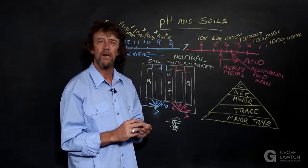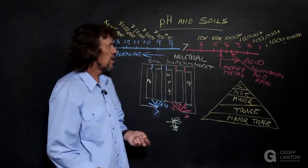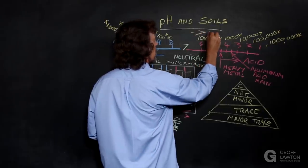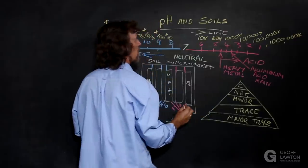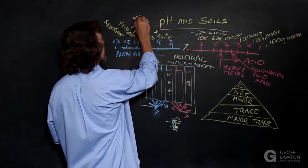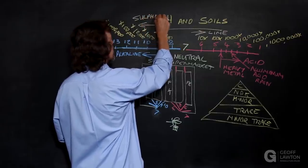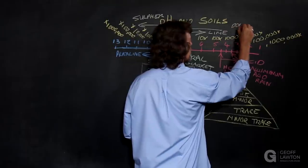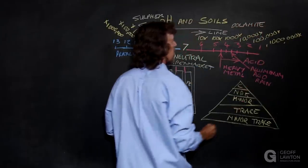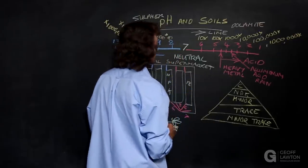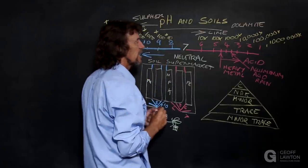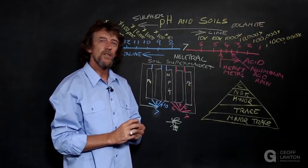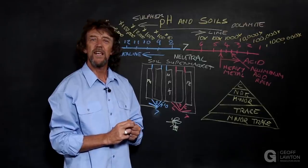If we want to change the pH, if we add lime here, or if we add sulfur here, then we adjust the pH. We can also add dolomite here. They're alkaline elements. Sulfur, flowers of sulfur, is an acidifying element. We can make adjustments. So lime and dolomite increases alkalinity. Sulfur increases acidity.